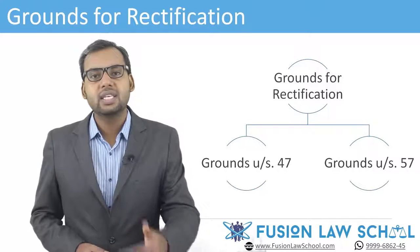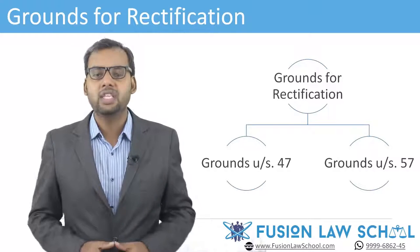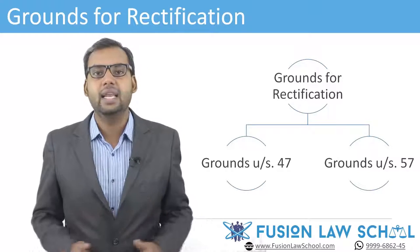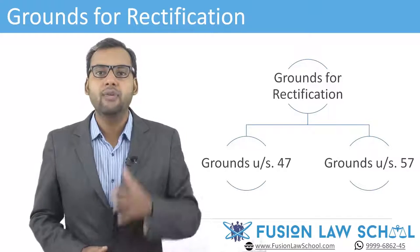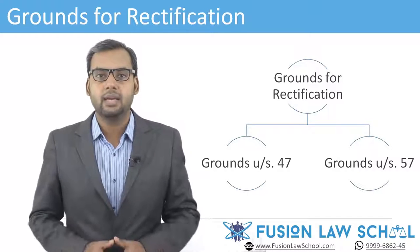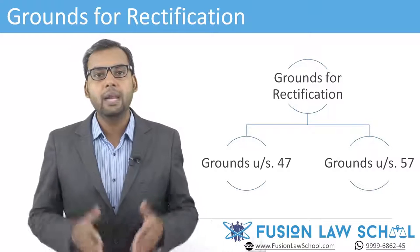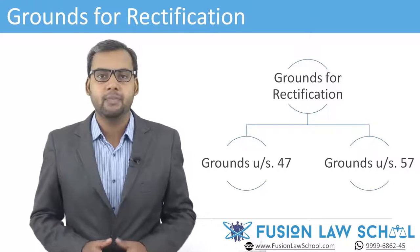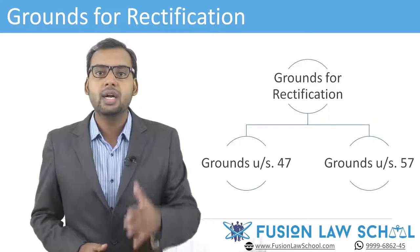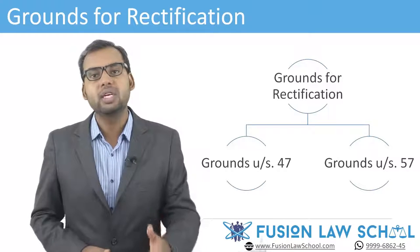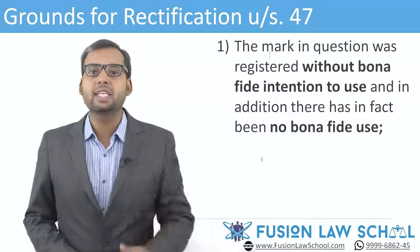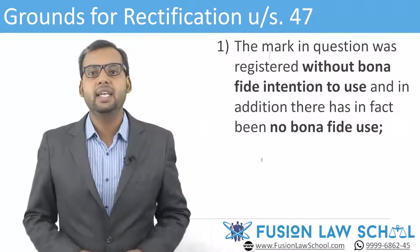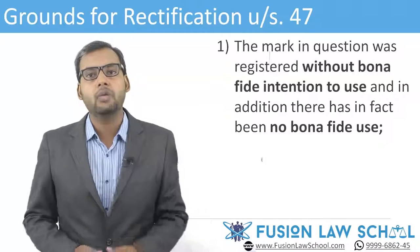The next topic is grounds for rectification. It is always better to learn substantive law before procedural law, so before we discuss the procedure under rectification proceedings, let's first discuss in detail the grounds on which a trademark can be rectified under sections 47 and 57. These mutually exclusive grounds can be divided into two categories: grounds under section 47 and grounds under section 57. Section 47 sets out two distinct alternative grounds for removal of a mark from the register.